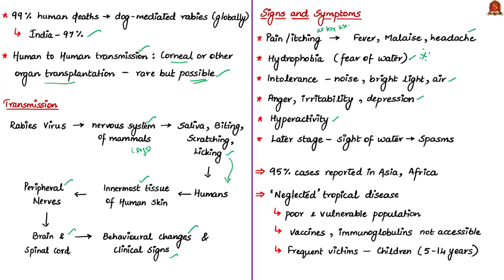The WHO notes that at a later stage, even the mere sight of water may provoke spasms — involuntary muscular contractions — in the neck and throat of infected individuals. Rabies is endemic on all continents except Antarctica, but about 95% of cases are reported in Asia and Africa. Rabies is one of the neglected tropical diseases, predominantly affecting poor and vulnerable populations in remote rural locations.